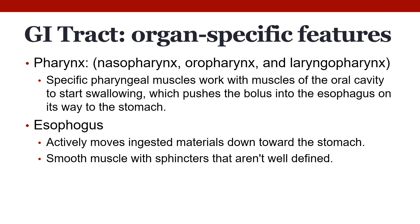Next, we'll talk about some organ-specific features, focusing first on organs of the GI tract. The pharynx: specific pharyngeal muscles work with muscles in the oral cavity to push the bolus of food — the chewed and moistened food — into the esophagus. The esophagus is the tube that transports food to the stomach. It is made up of smooth muscle, has sphincters on either end that are not well-defined, and actively moves ingested materials down toward the stomach.